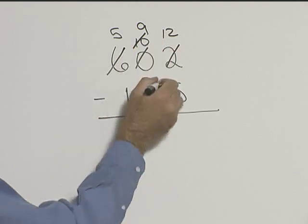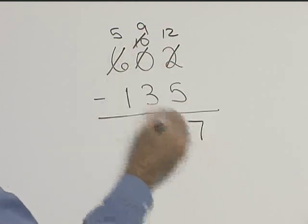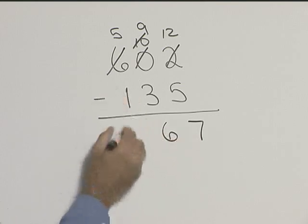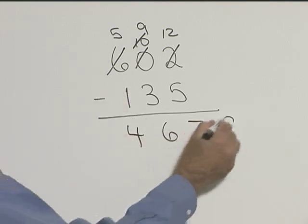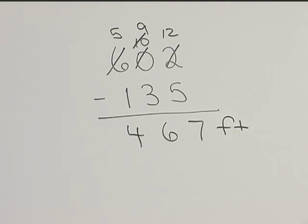And now we're ready to subtract. So 5 from 12 is 7, 3 from 9 is 6, and 1 from 5 is 4. So the buoy is 467 feet from the other side of the river.